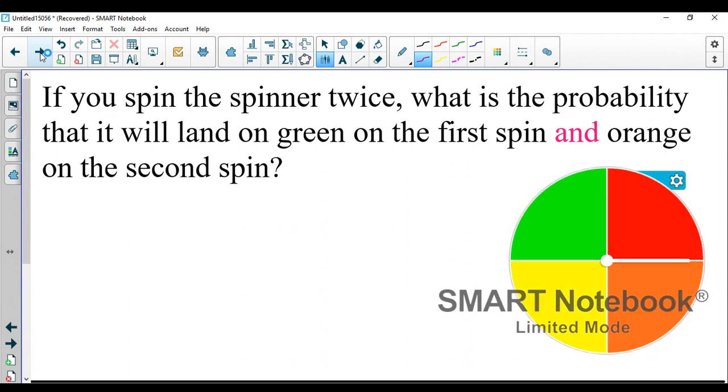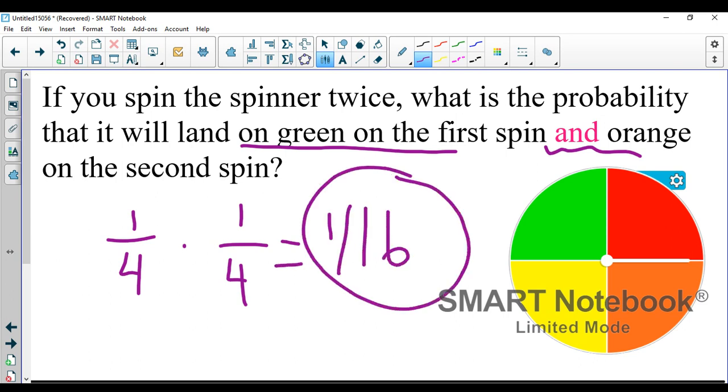One quick spinner example. If you spin the spinner twice, what is the probability it will land on green on the first spin and orange on the second spin? So green, one out of four total. Orange, one out of four total, giving you a one out of sixteen chance.